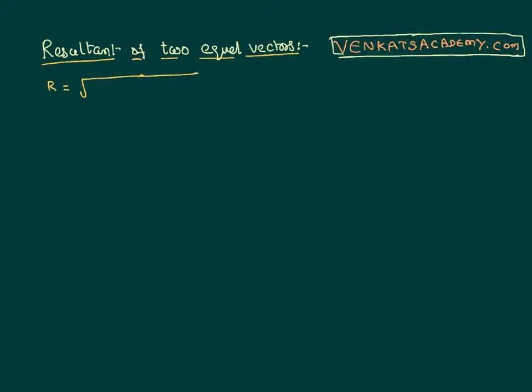We have proved that if p and q are the vectors, the resultant is nothing but the square root of p squared plus q squared plus 2pq cosθ.